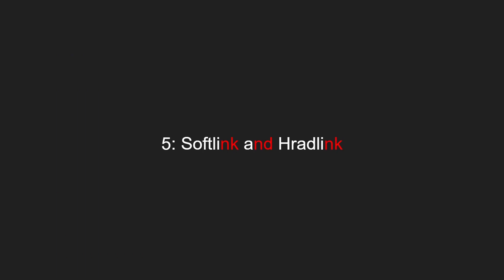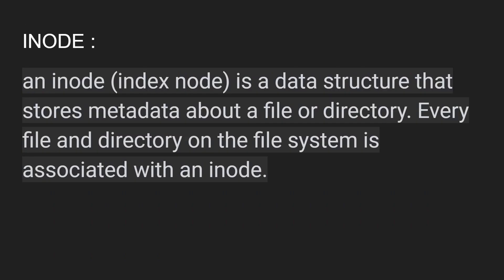Now we are going to see about soft links and hard links. Before I start, I would like to introduce you to the inode. An inode is an index node, which is a data structure that stores metadata about a file or a directory. Every file and directory on the file system is associated with an inode — basically, an inode is the index number of a particular file.